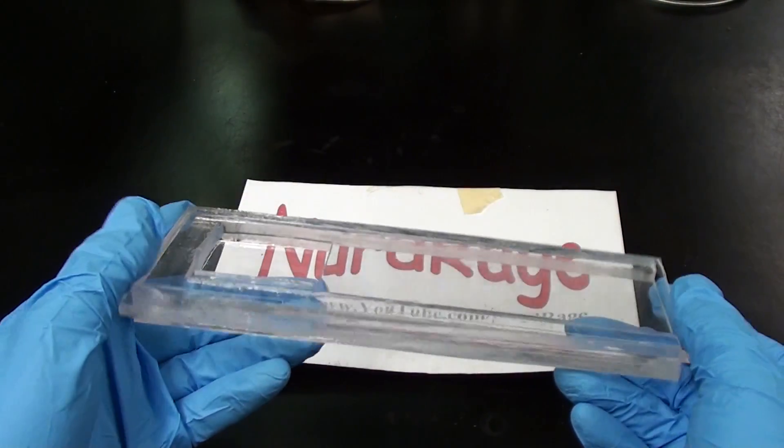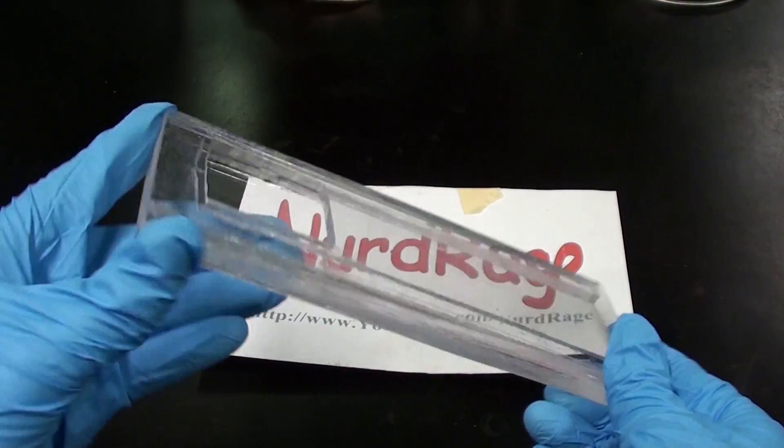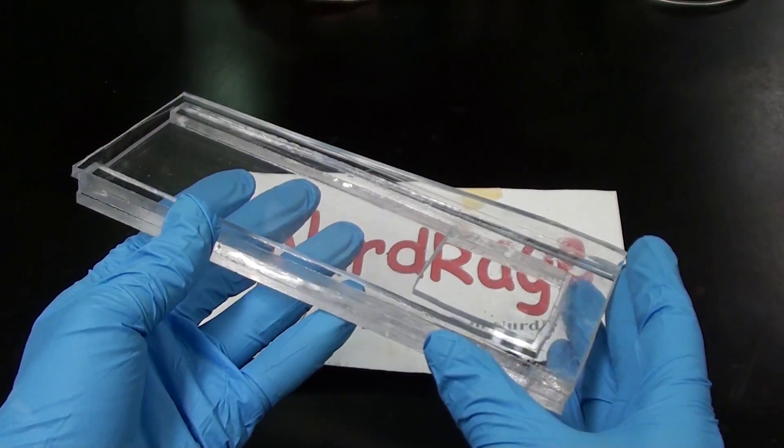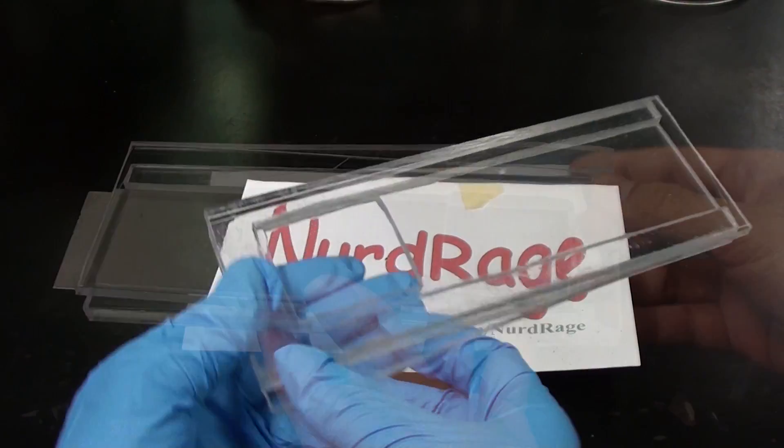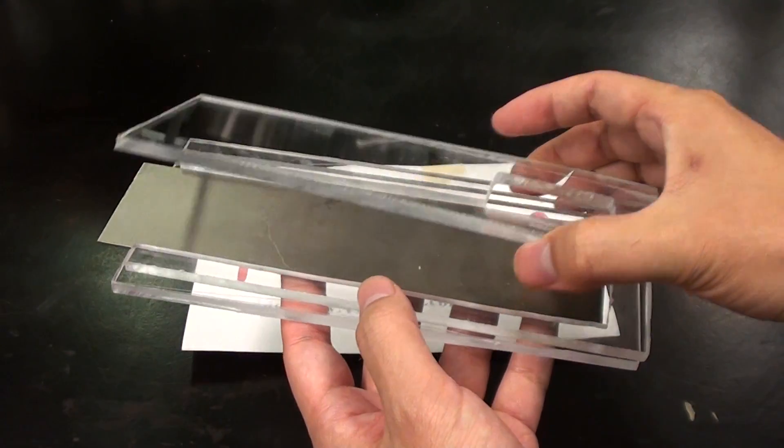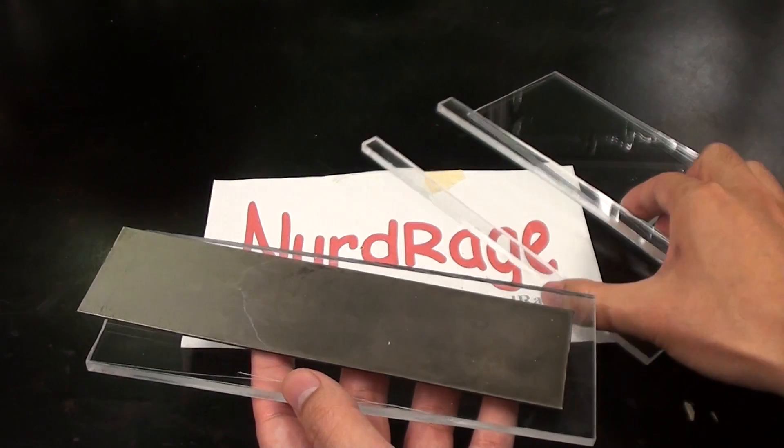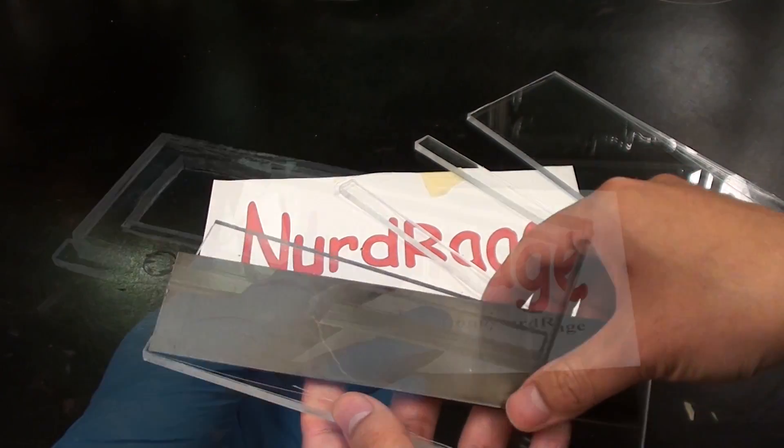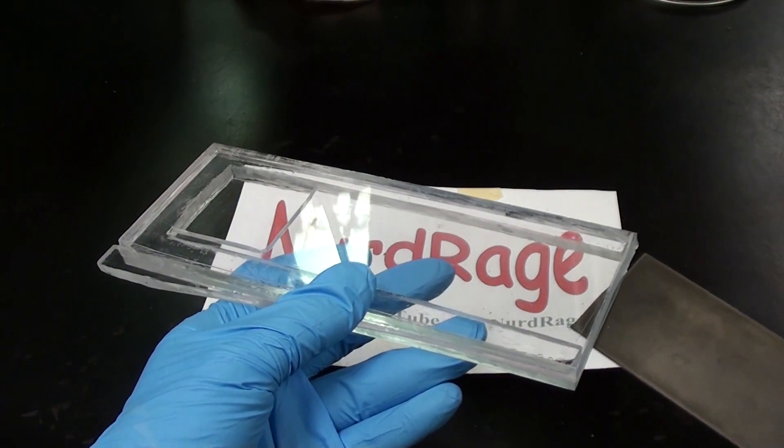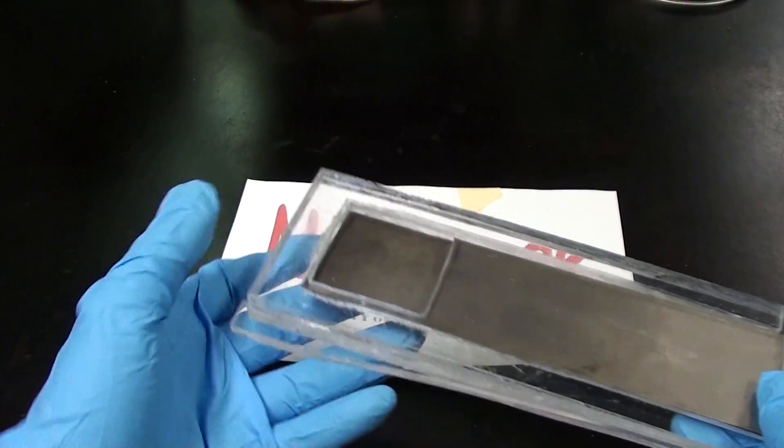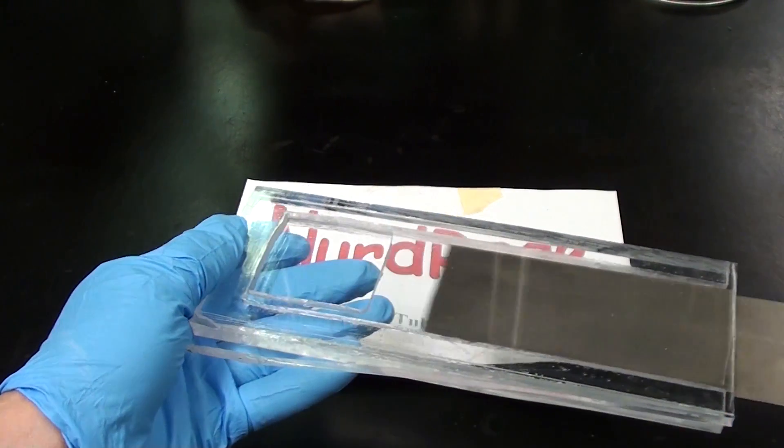Unfortunately my camera didn't properly record that part but it's very easy. You just put drops of dichloromethane or tetrahydrofuran solvent between the acrylic surfaces and they'll bond fairly easily. There are plenty of YouTube videos on that process already. Look up acrylic solvent bonding. Let me just test to make sure the electrode still fits. And it looks good. I'm going to cut and trim down the excess bits since we're almost done here.